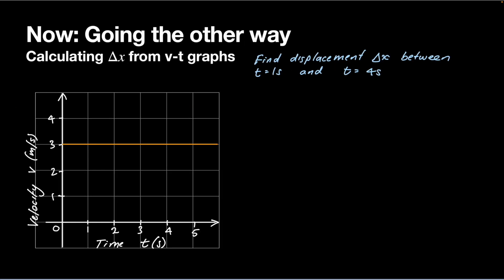Here's a velocity-time graph. We'll start with a simple one with a velocity that's just constant. Over this particular interval of time the velocity is three meters per second. We're asked to find the displacement between one and four seconds.